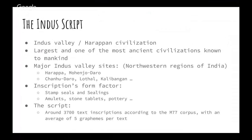Before getting into the algorithms, let's look at what the Indus scripts are. The Indus scripts date back 4,000 years and represent one of the largest and most ancient civilizations known to mankind. This particular inscription has not been deciphered to date — we do not know what these inscriptions are trying to convey. The name comes from the civilization that flourished along the banks of the river Indus. It was first discovered at Harappa in the 19th century during British rule, and hence the name Indus Valley Civilization or Harappan Civilization.